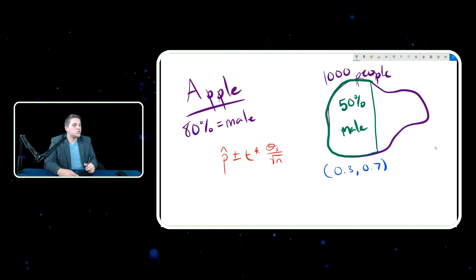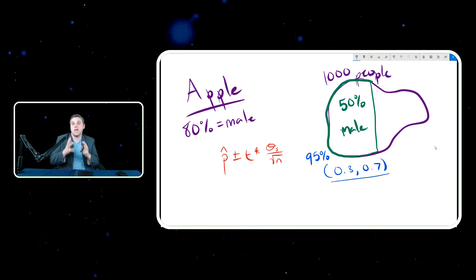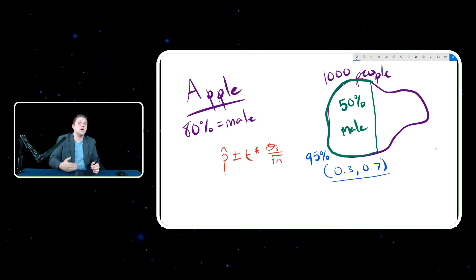If this was my confidence interval, then I can say that, and let's say I'm 95% certain, which is typically the percentage of accuracy that you would need in the scientific community to be convincing enough. So now you can go up to the scientific community and say I am 95% confident that the actual proportion of Apple users that are male are between 30 and 70 percent.